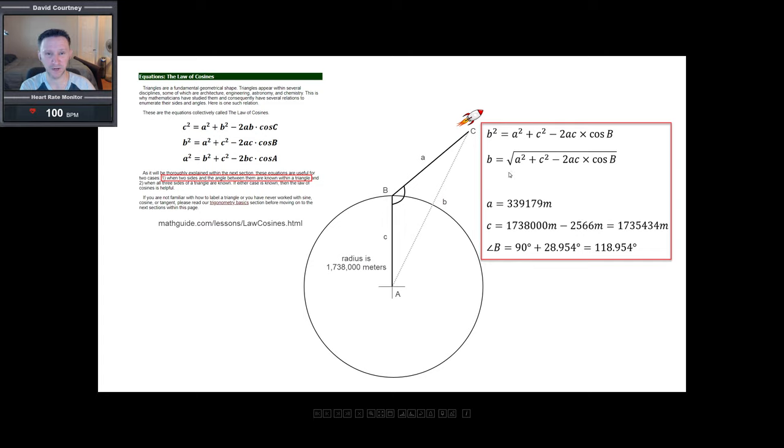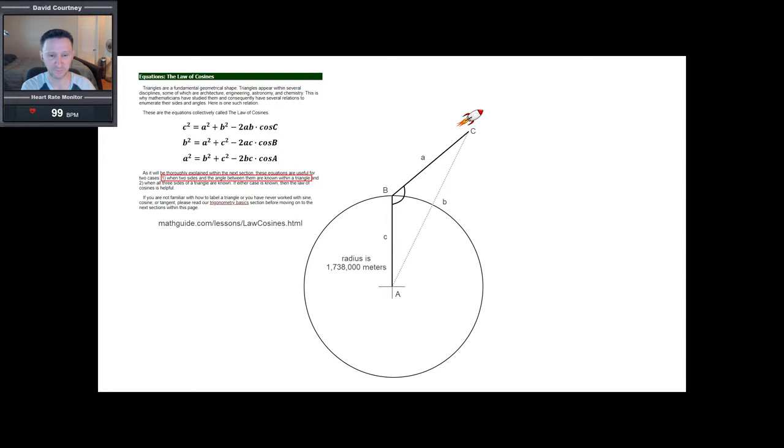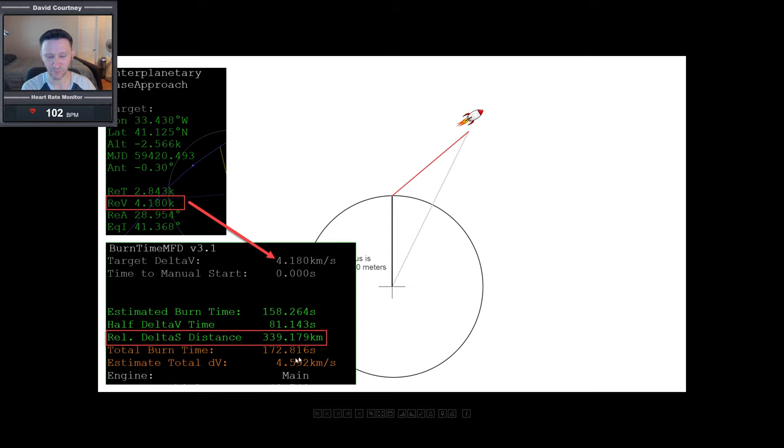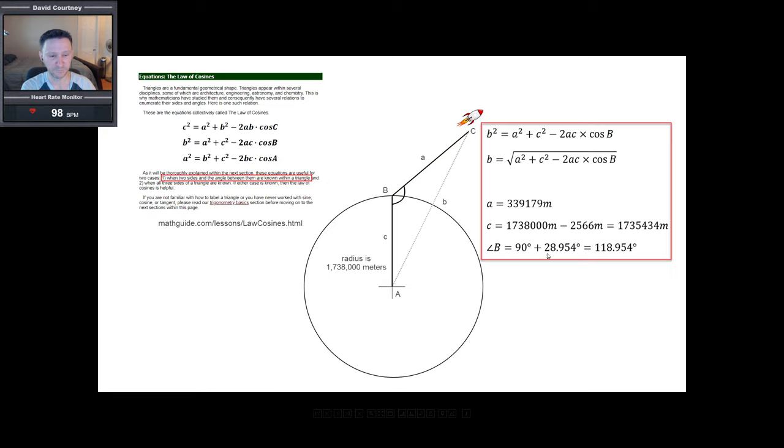So I'm taking this equation B squared equals A squared plus C squared minus two times AC times cosine B. And then we're taking the square root of both sides to isolate the B variable, the side B by itself. Now, technically, when you do this, you're going to have a plus and a minus. But in our case, we're talking about distances and lengths here. So negative would be erroneous. So we're not going to worry about the plus and minus. We're just going to keep the positive answer. And again, we know the length of side A. That was what we calculated from plugging in the reentry velocity into burn time calculator. And then we got this number, the three hundred thirty nine thousand one hundred and seventy nine meters.